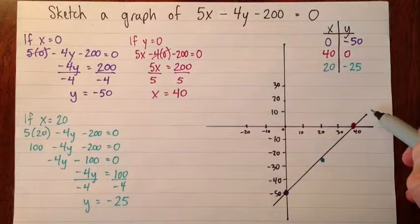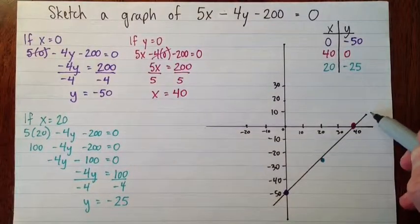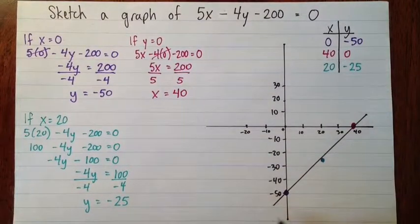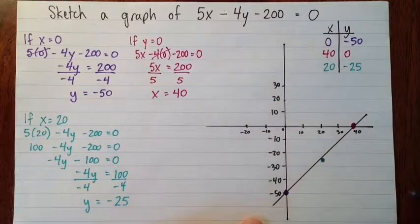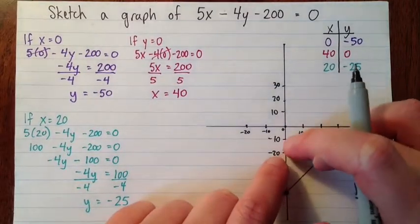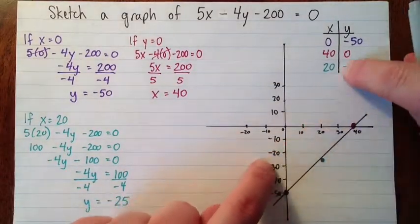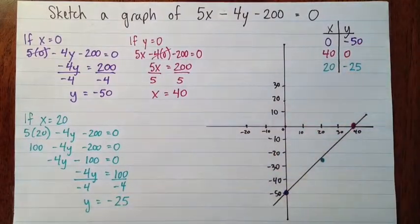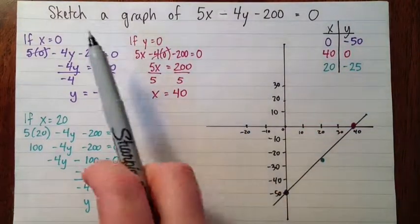And we always extend the line past the points out to just about the edges of your graph. I suppose I could have gone a little bit lower, but it's pretty close. So if your points were right here, you'd extend them all the way out to the edges. Okay, so just a quick review.